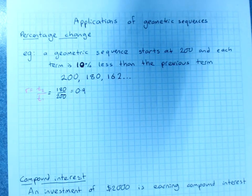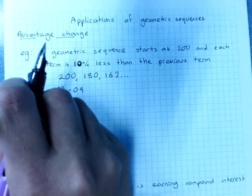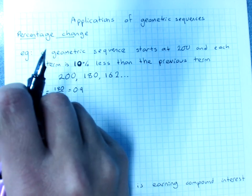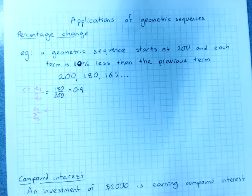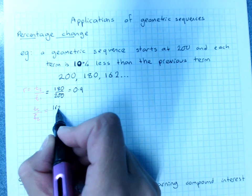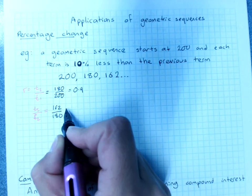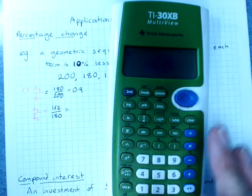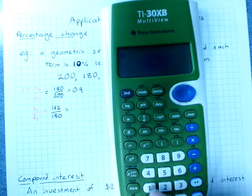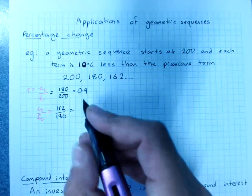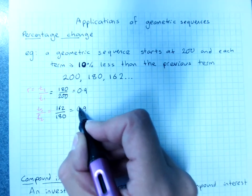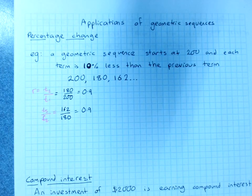And we could also check that for the next one if you wanted. T3 over T2, 162 over 180. We don't have to do this every time, I'm just showing you we've got a common ratio. 0.9. So you can see that this percentage reduction pattern has a common ratio.